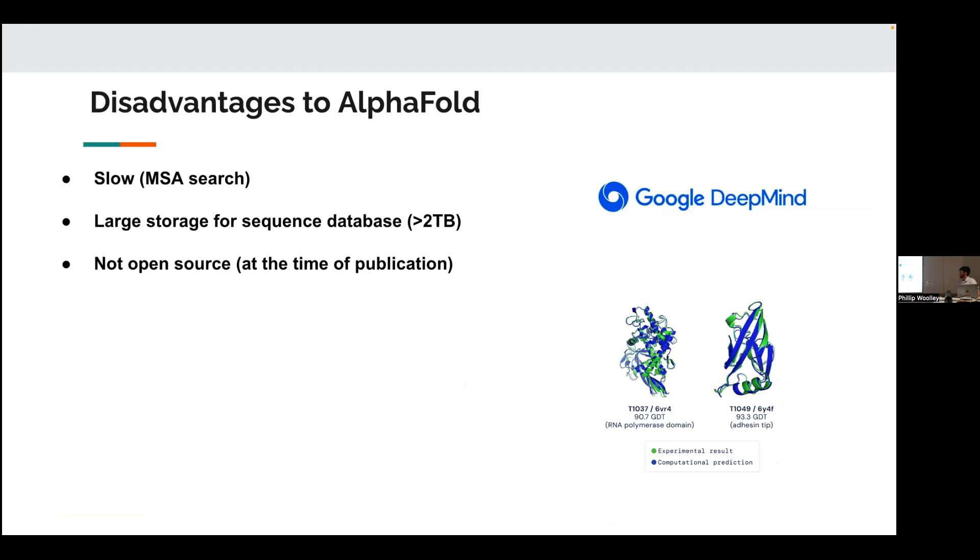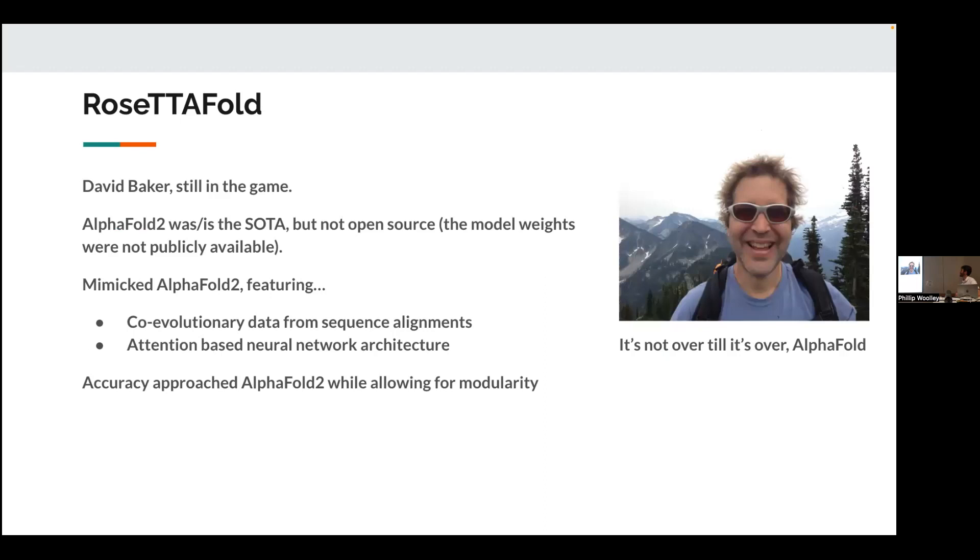So AlphaFold was a paradigm shift for sure. It really opened up like a whole field and so many possibilities. But there's still lots of disadvantages to it. The number one being it's very slow. And that's actually mostly because of the multiple sequence alignment search at the beginning. That takes a crazy amount of time. It also needs to store the sequence database, which is about two terabytes. So that's a crazy amount of space that you need to have to run it. And then when it was initially published, it wasn't open source. And so the field was like, this is amazing. We can't use it, which is very frustrating. So.